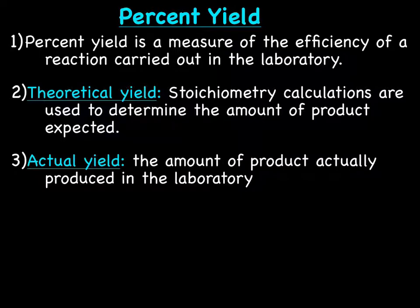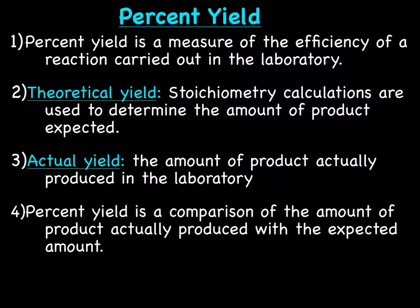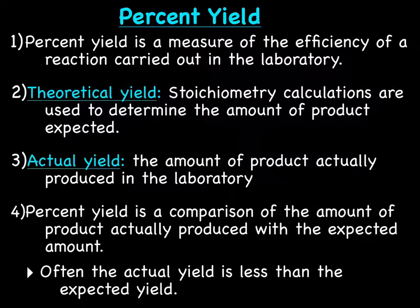The actual yield is the amount of product that was actually produced in a laboratory. So how much when you actually mixed the reactants, what really happened, not just what you hoped would happen which would be the theoretical yield. Percent yield is a comparison of the amount of product actually produced with the expected amount. And most often the actual yield is less than the expected yield.